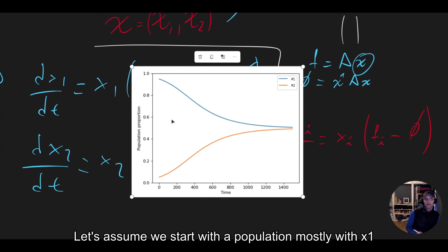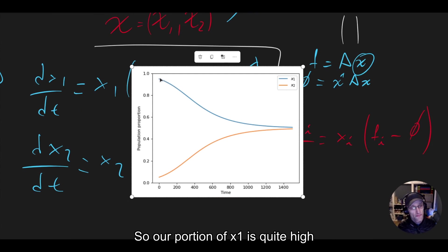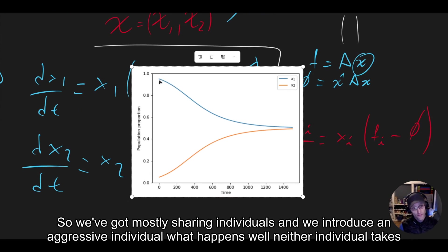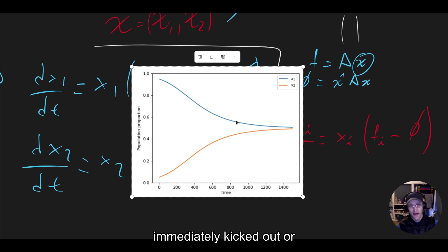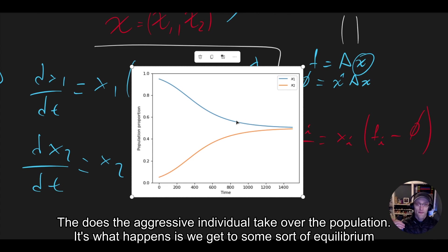So here we're saying, all right, let's assume we start with a population mostly with x1. So we've got mostly sharing individuals and we introduce an aggressive individual. What happens? Well, the aggressive individual is neither immediately kicked out, nor does the aggressive individual take over the population.